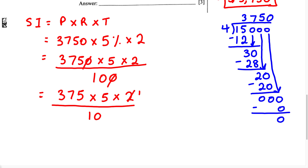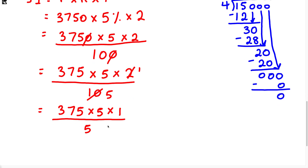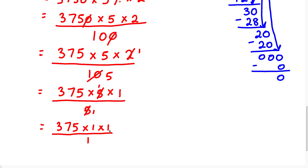Now 2 can go into 2 one time, and 2 can go into 10 five times, leaving us with 375 multiplied by 5, multiplied by 1, over 5. Then 5 can go into 5 one time, and 5 can go into 5 one time again. Therefore we're left with 375 multiplied by 1, multiplied by 1, over 1. Any number multiplied by 1 gives that number, so we get 375 over 1. Any number divided by 1 gives that number, so the result is 375.